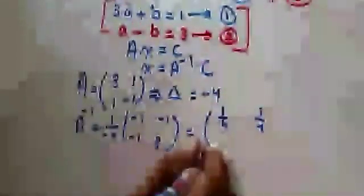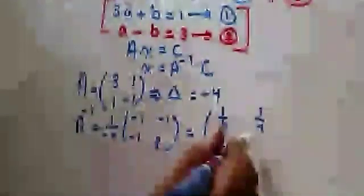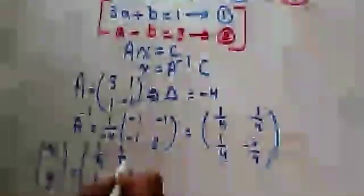دلوقتي: 1 over negative 4 مضروب في الـmatrix يبقى: quarter وquarter / quarter وnegative three-quarters. دي الـA⁻¹. دلوقتي هنعملها times الـC. يبقى X matrix — اللي هي a وb — equals الـA⁻¹ ده مضروب في السي اللي هي 3 وان. يلا نضرب: quarter times 3 plus quarter times 1 = three-quarters plus quarter = 1.